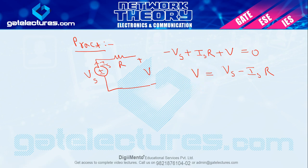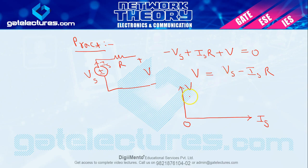To agar main yahan par iska graph draw karun. Supply voltage V versus Is ka graph. Jab Is ki value 0 hogi to V Vs ke equal hoga. Jaise jaise Is ki value increase hoti chalegi, equation mein Is negative sign ke saath hai, subtract ho raha hai Is into R. To jaise jaise Is aapka increase hoga, aapka jo V hai wo decrease hota chala jayega. Ideally Vs par constant hona chahiye tha, but yahan par V lagatar decrease ho raha hai.